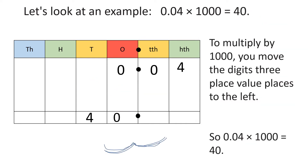Now we will multiply by 1000. We will become 1000 times bigger, which means each digit will move three places on the place value chart. Our four will move one, two, three places into the tens column. We now don't have any units, so we will show that by placing a zero in the units column. So 0.04 times 1000 will equal 40.